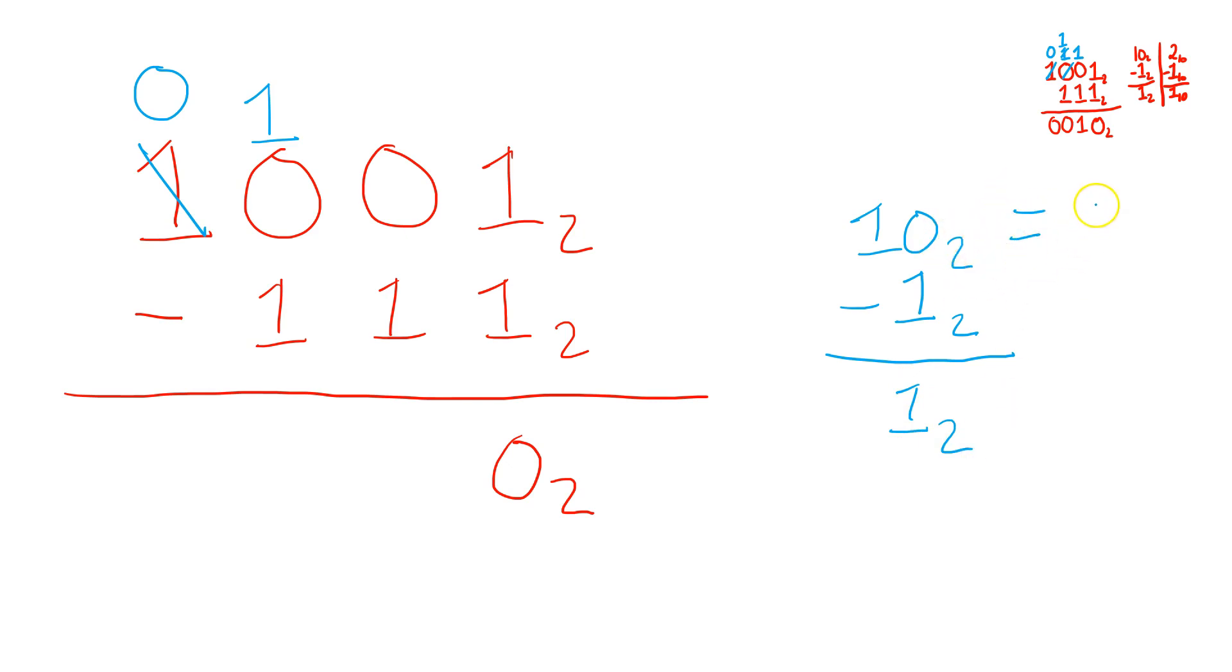1, 0 in base 2 is equivalent to just writing 2 in base 10. 1 in base 2 is equivalent to writing 1 in base 10. And now 2 in base 10 minus 1 in base 10, of course, is just 1 in base 10. So in binary, when you have 1, 0, base 2, minus 1 in base 2, it leaves 1 in base 2.